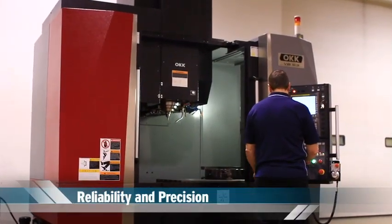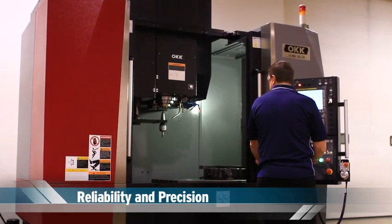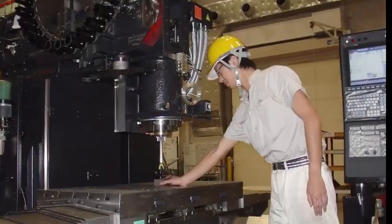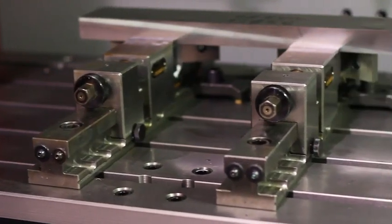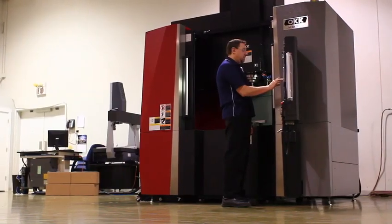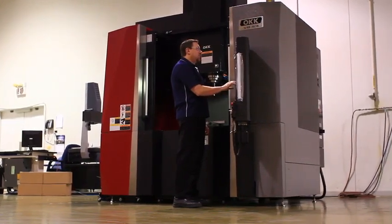OKK has made it our mission to set the standard for reliability and precision. All of our machines, including the VB53, come from our temperature-controlled plant in Japan. Nearly all main components are made in-house, giving you the dependability and consistency that OKK is renowned for.